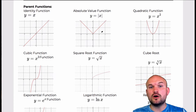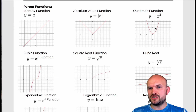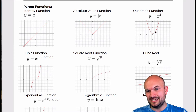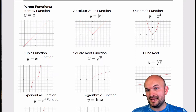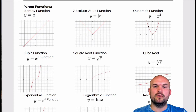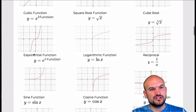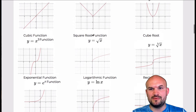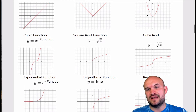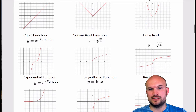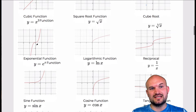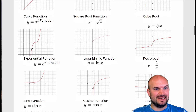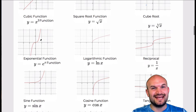The quadratic function is decreasing from negative infinity to 0, then increasing from 0 to infinity. It has an absolute minimum at (0, 0), is bounded below, and is an even function symmetrical about the y-axis. The domain is all real numbers and the range is 0 to infinity. The cubic function is always increasing with no maximum or minimum. It is an odd function, symmetrical about the origin. The domain is all real numbers and the range is all real numbers — it is unbounded.